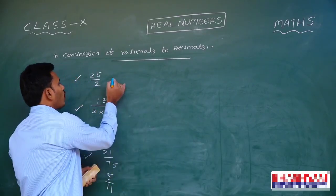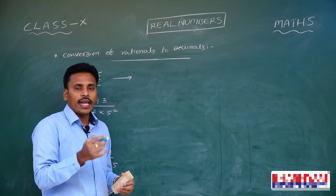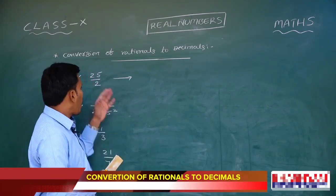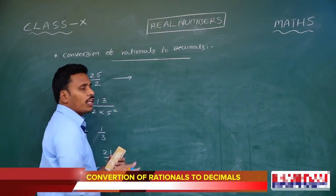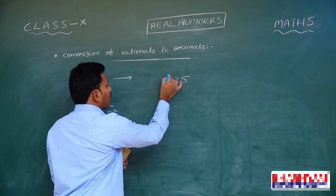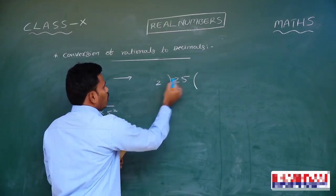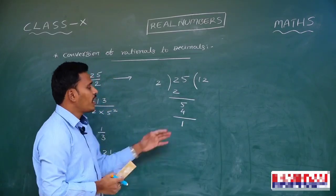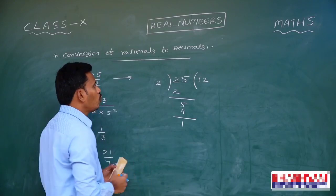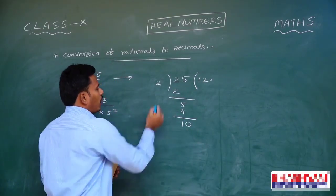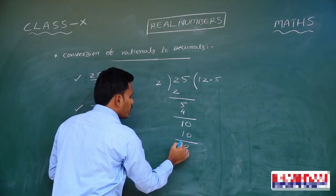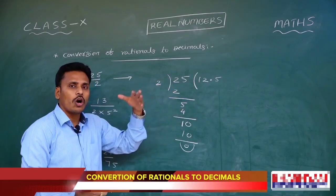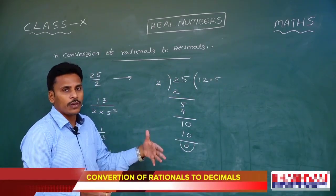Have a look at this. The first one is 25 by 2. Converting a rational number or a fraction into decimal is possible just by the division process. Dividing 25 by 2: 2 ones are 2, remainder 5; 2 twos are 4, so 5 minus 4 is 1. Using a decimal point with a 0, 2 fives are 10, remainder 0. So the decimal representation for 25 by 2 is 12.5.